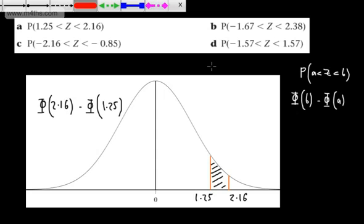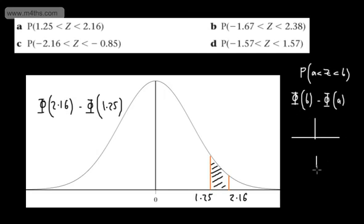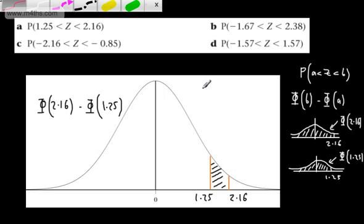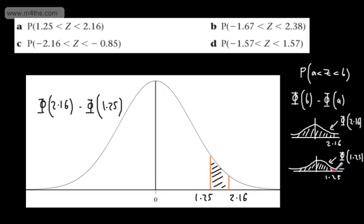If you want to look at that slightly differently, we can draw two standard normal curves. For the first one, the area trapped under the curve to the left of 2.16 is phi of 2.16. For the second curve, the point is 1.25 and the area to the left is phi of 1.25. Quite clearly, we're interested in the sliver between the two.